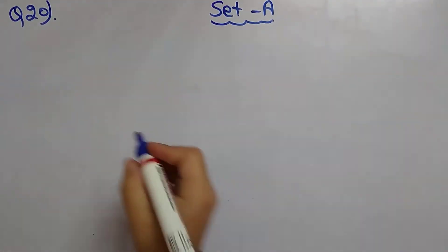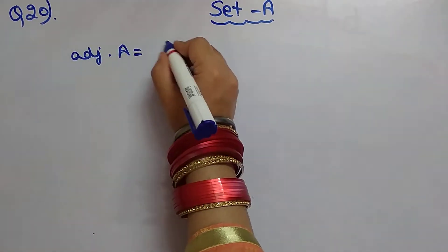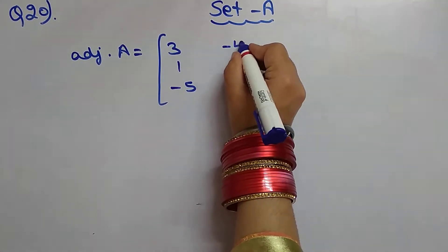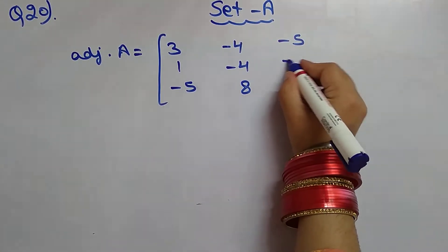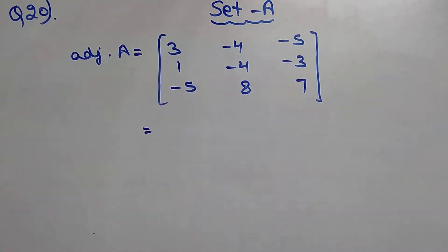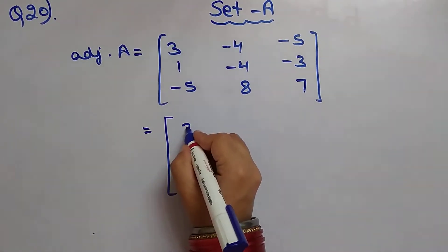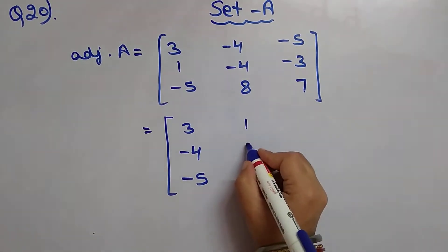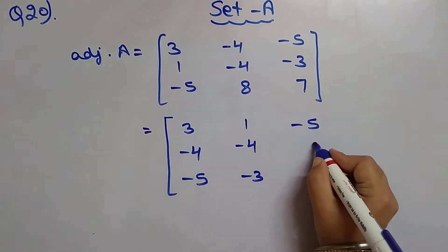Similarly, A31, A32, A33 can be found. The adjoint of A is the transpose of the cofactor matrix, which gives: adjoint A equals [3, 1, -5; -4, -4, 8; -5, -3, 7].